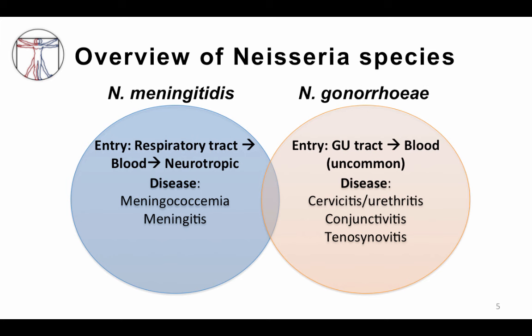Neisseria meningitidis enters through the respiratory tract, so it can actually be transmitted through droplets from person to person. Then it goes into the bloodstream, and we'll talk about some of the properties that allow it to invade. It has a neurotropism, meaning a predilection to enter the cerebral spinal fluid, and in some patients they will develop meningitis.